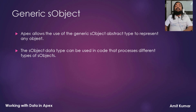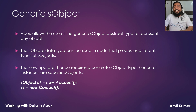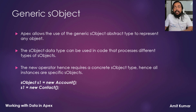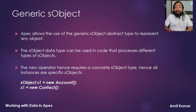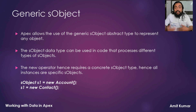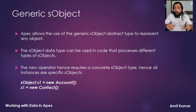Just like you use the new operator to create an instance of any Salesforce object, here also you need to use the new operator to create an instance. But as I mentioned, generic sObject is an abstract type, so you cannot create an instance directly for it.